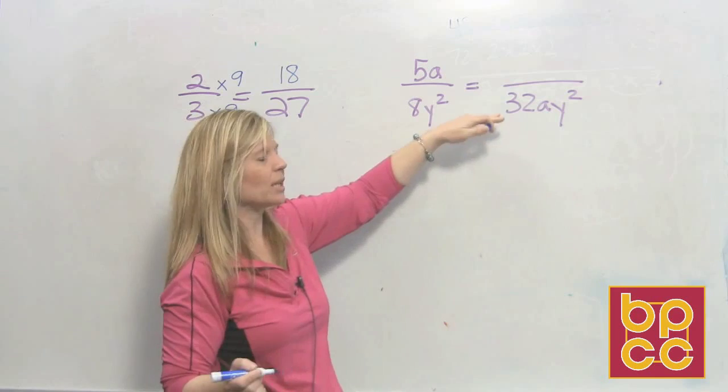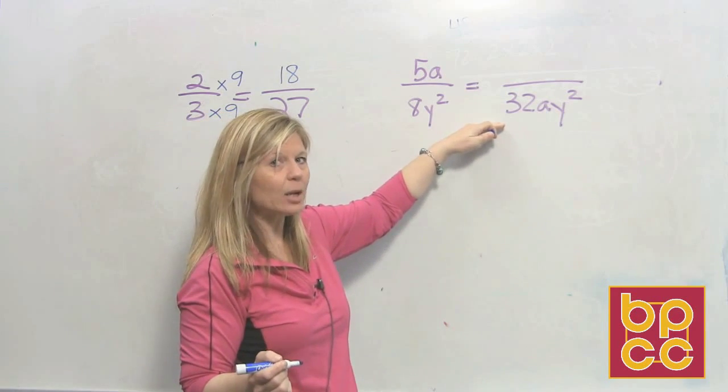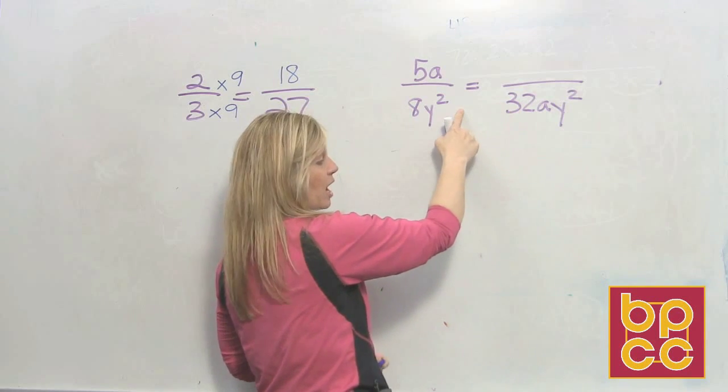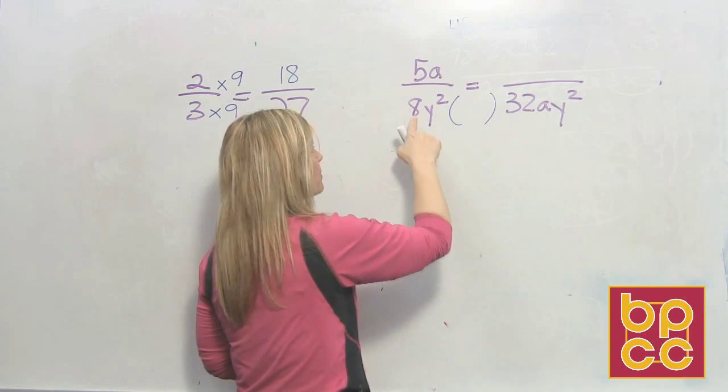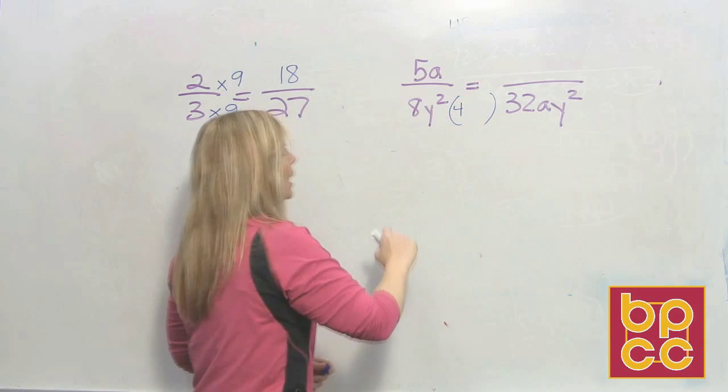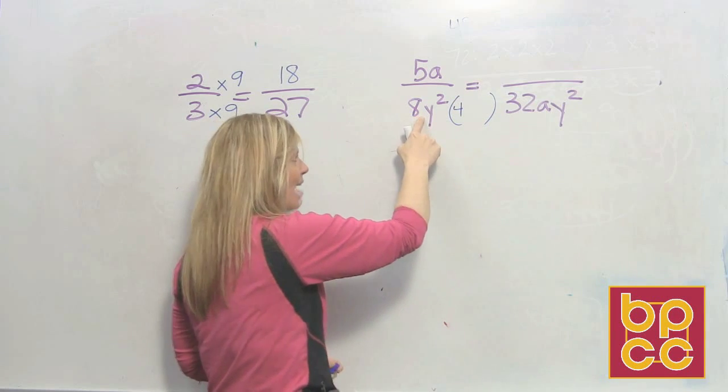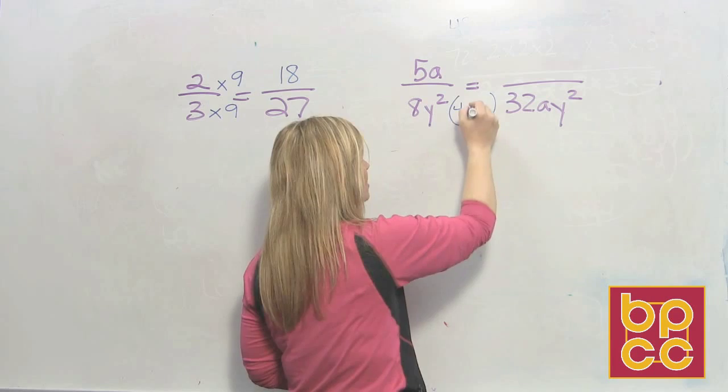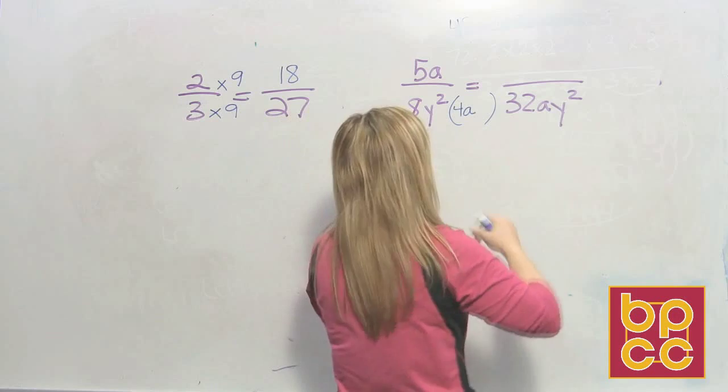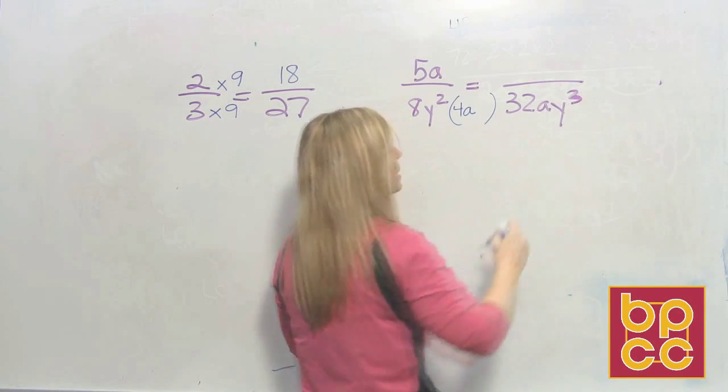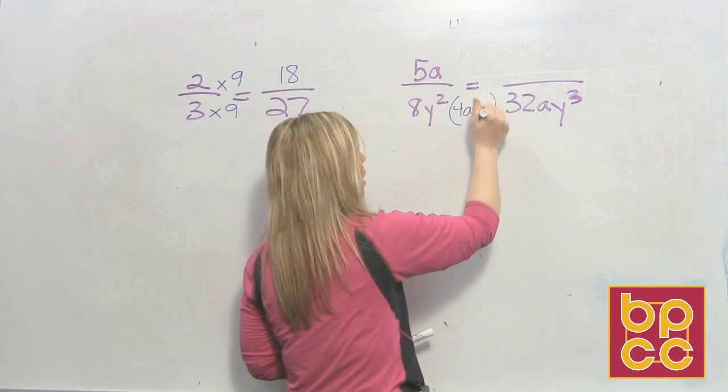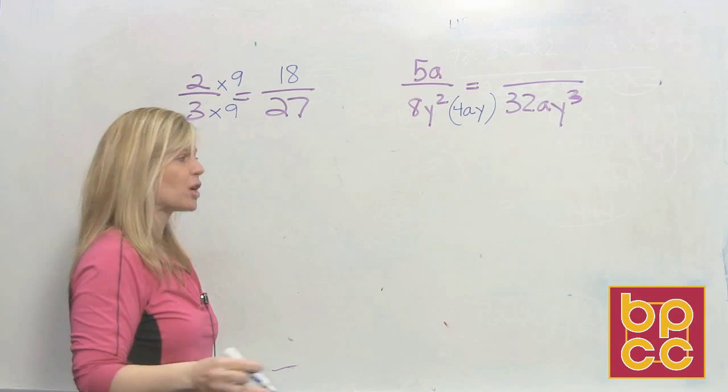That's going to be also important in algebra. To make equivalent fractions we do the same concept. We figure out what to multiply to both the denominator and the numerator. So we do it in steps. How does an eight become a thirty-two? We multiply by four. How does not having an a make us have an a? We obviously multiply by a. And how does a y-squared become a y-cubed? Well, y-squared can become a y-cubed by multiplying by y. So we're using our skills from chapter twelve.